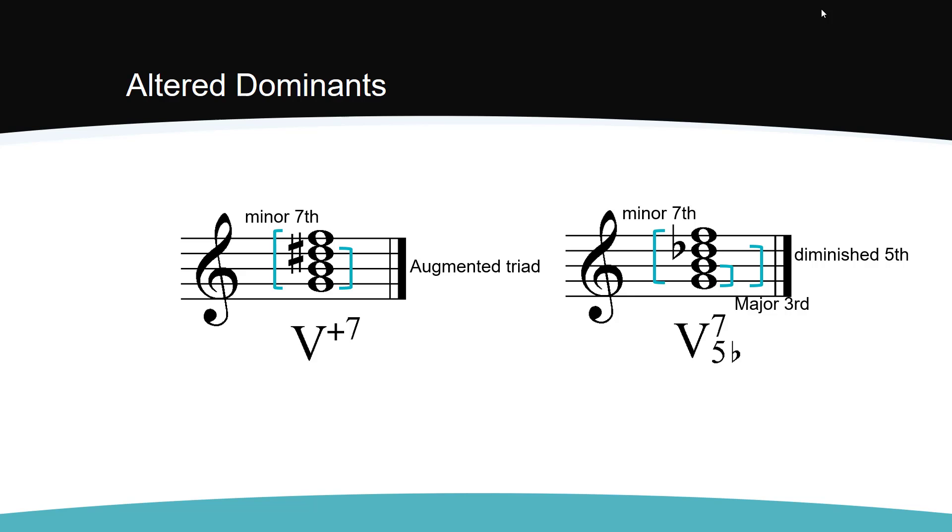One other alteration can occur. We can lower both the 3rd and the 5th of a 7th chord. This only happens on 7th chords, not on triads. We create a diminished triad with a minor 7th, otherwise known as a half-diminished 7th chord.